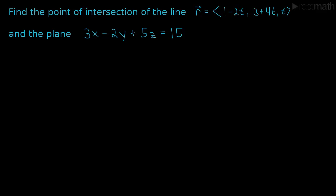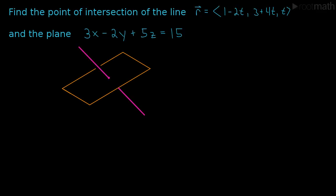Here we're asked to find the point of intersection of a line given by this vector equation and this plane here. We have a line intersecting a plane, and what we're being asked for is this point of intersection.